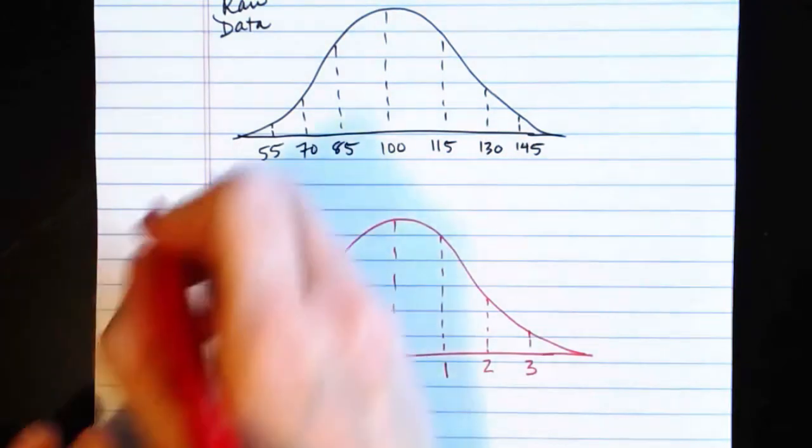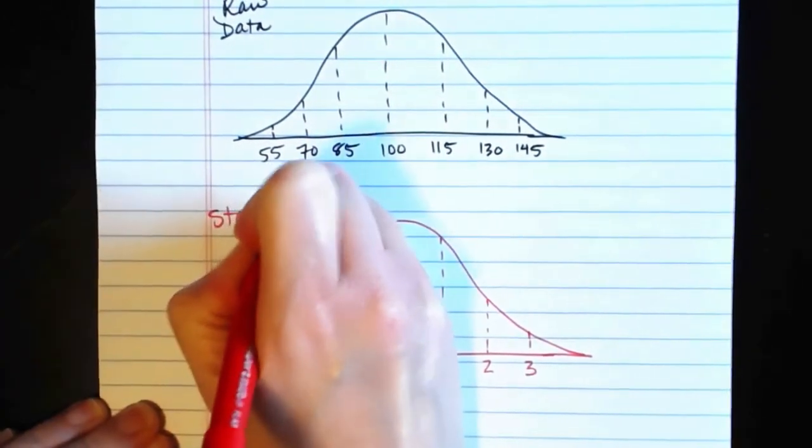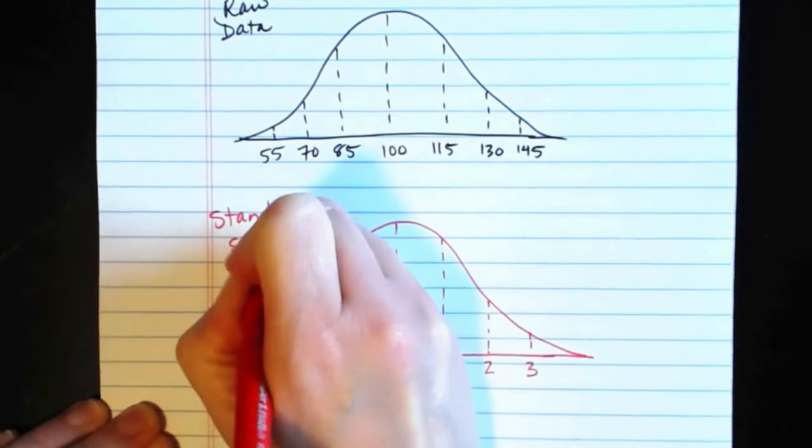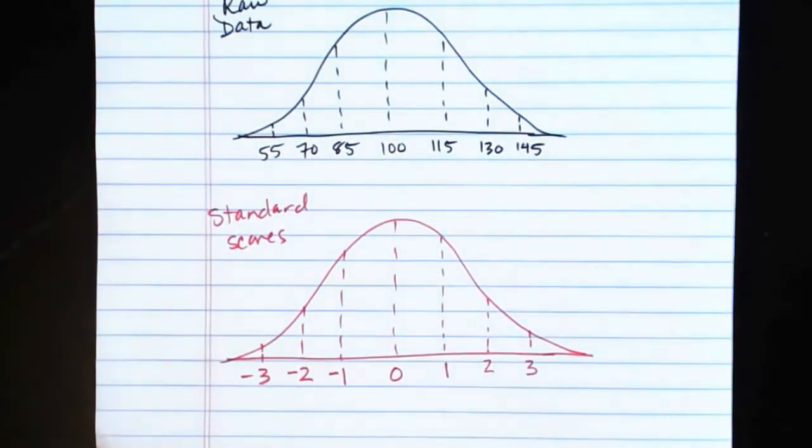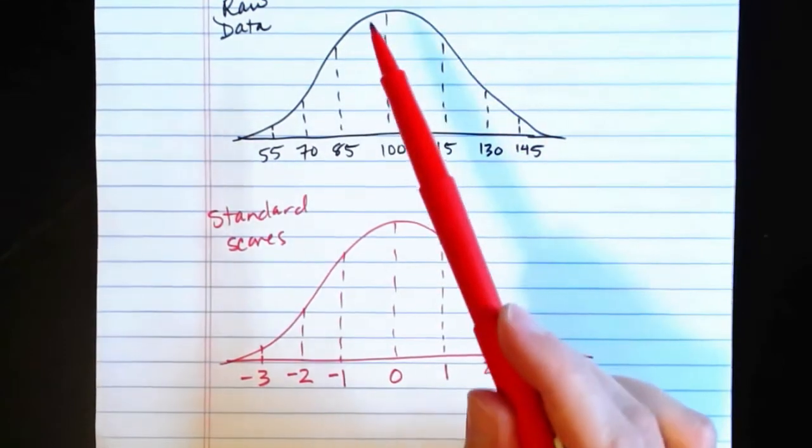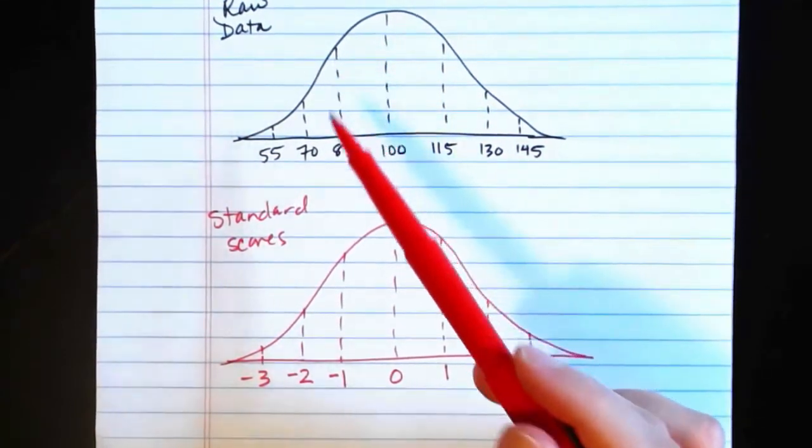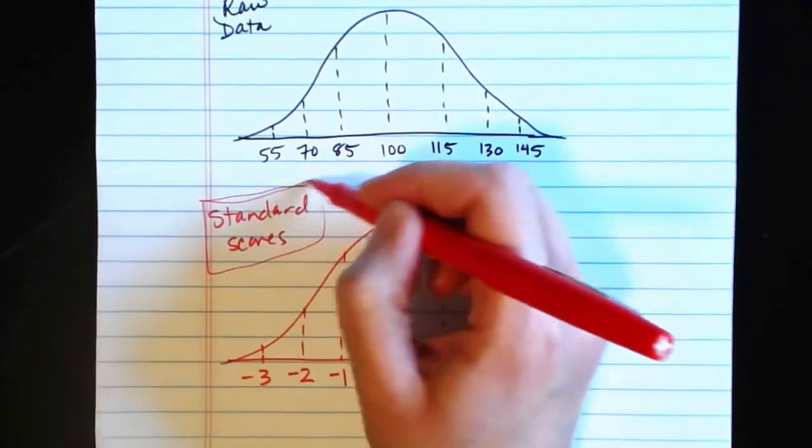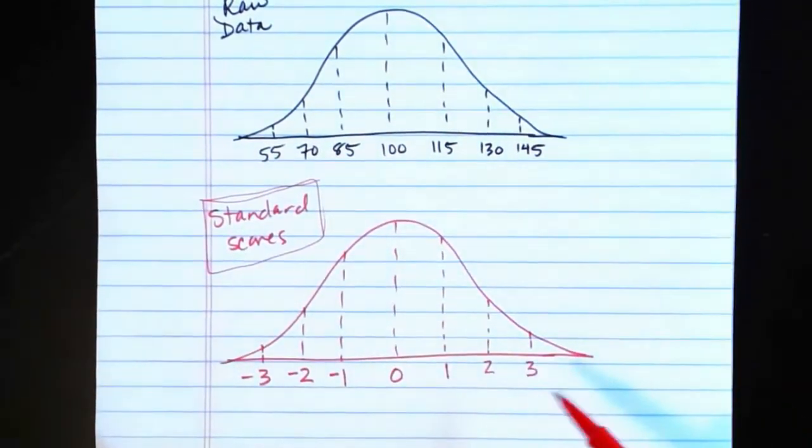This is what it looks like in terms of standard scores. And regardless of what your mean and standard deviation of your raw data were, once you make this conversion into z-scores, every single normal curve boils down to this one.